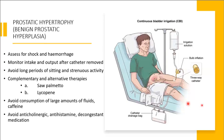Complementary therapies like saw palmetto or lycopene may help with enlarged prostate. Teach clients to avoid large amounts of fluids and caffeine. Also avoid anticholinergics (can cause urinary retention), antihistamines (can cause difficulty urinating and constipation), and decongestants (can cause dry mouth, restlessness, and agitation).